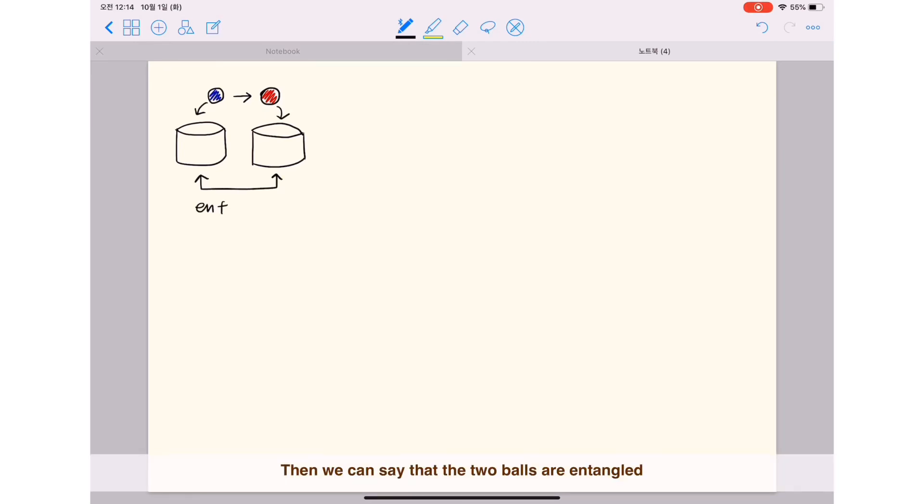Then we can say that the two balls are entangled because there are only two conditions: if one is blue, the other can only be red.